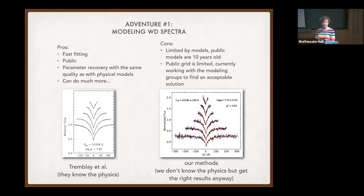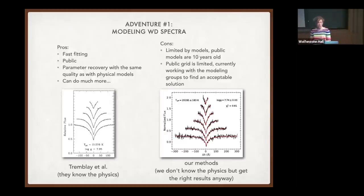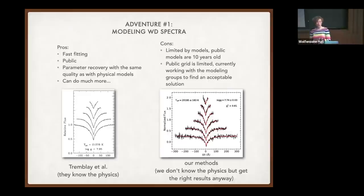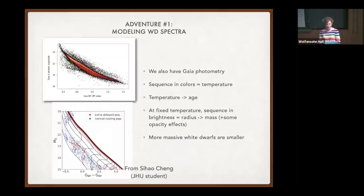This code allows you to very quickly interpolate between those models and produce a model of any temperature and gravity, as long as it's within the bounds of the initial grid. On the left I'm showing a typical theoretical modeling paper with H-alpha, H-beta, H-gamma fitted — data and model superposed. Our method just interpolates over this grid of parameters very cleverly and produces quite similar results. The pros: it's very fast once trained, it's public — you can go fit your favorite DA hydrogen atmosphere white dwarf. We've tested it extensively and recover parameters with the same quality as people who actually know what they're doing. The cons: we are limited by models, and the public models are 10 years old or more.